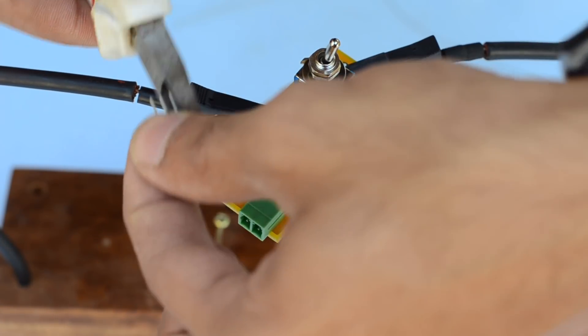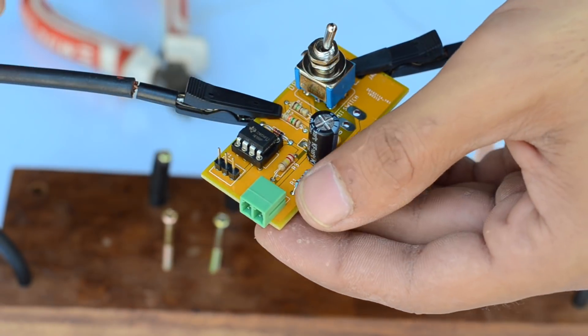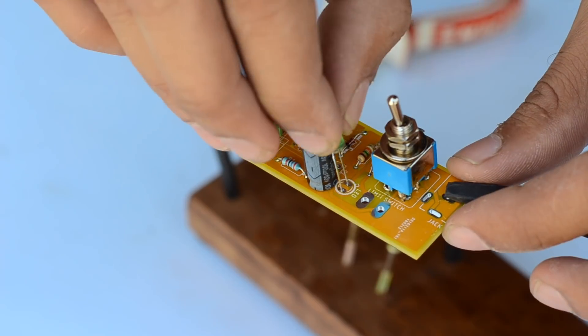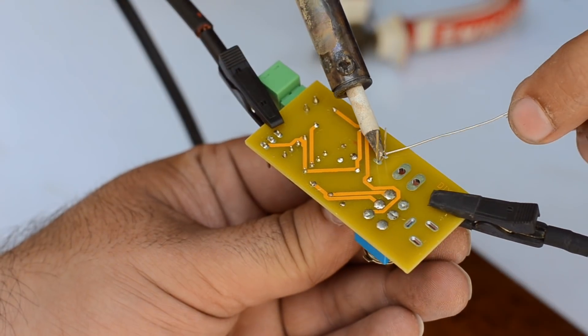To connect the servo motor, I've used some male headers, while I've also used an LED light to indicate the working of the machine.